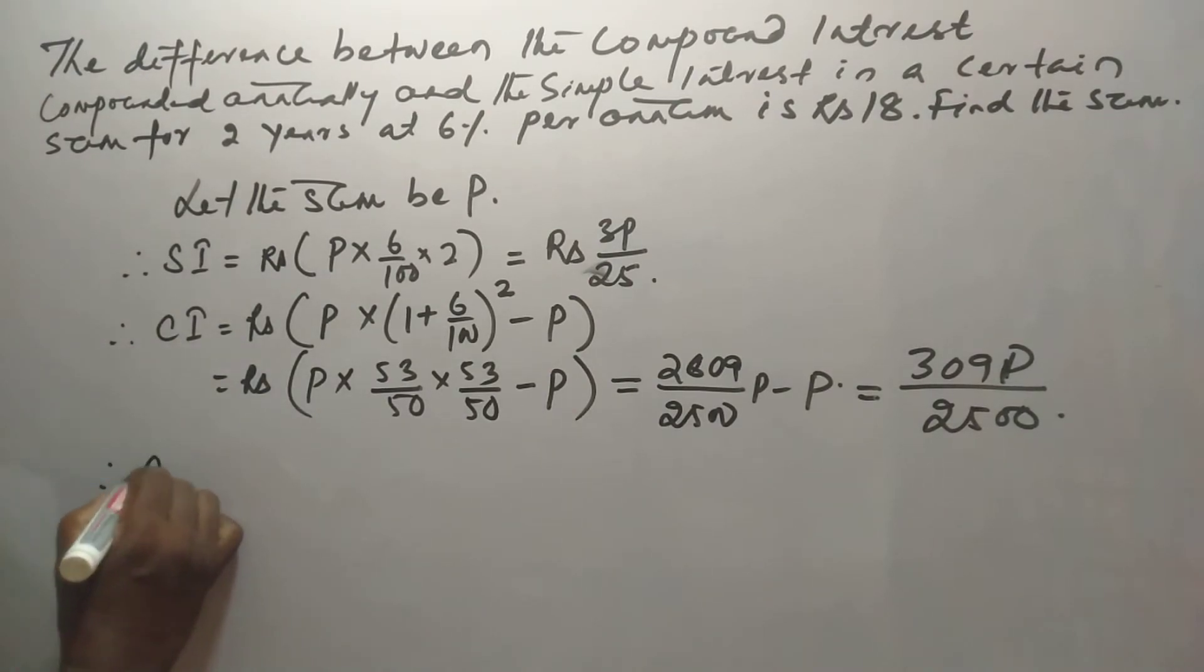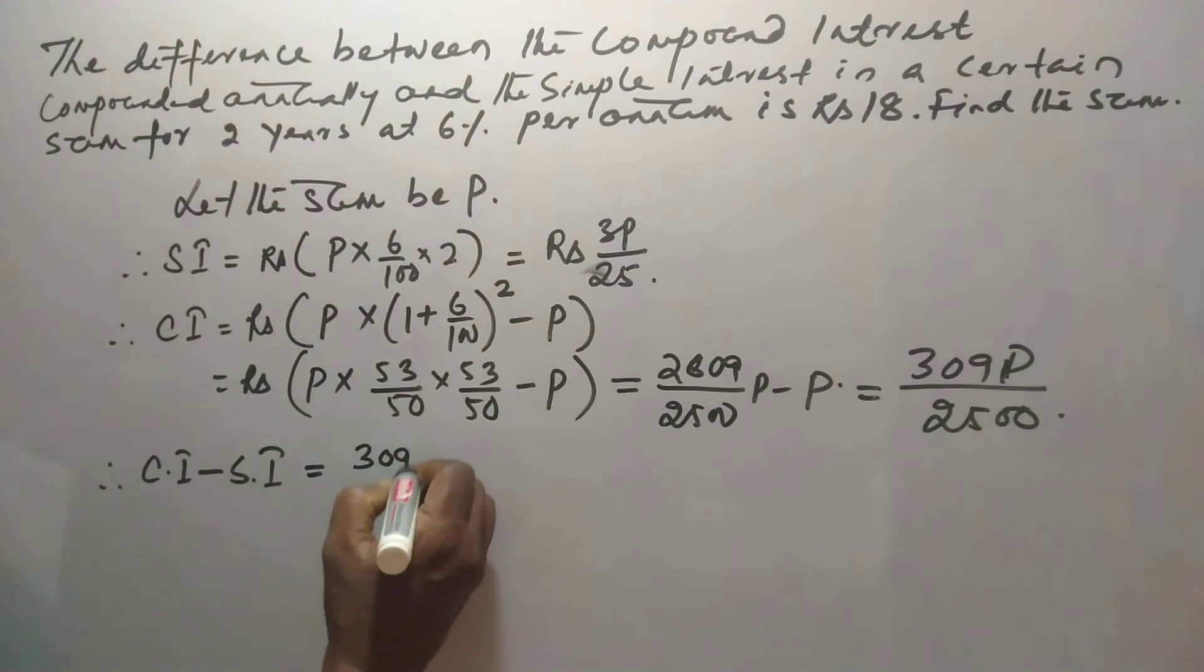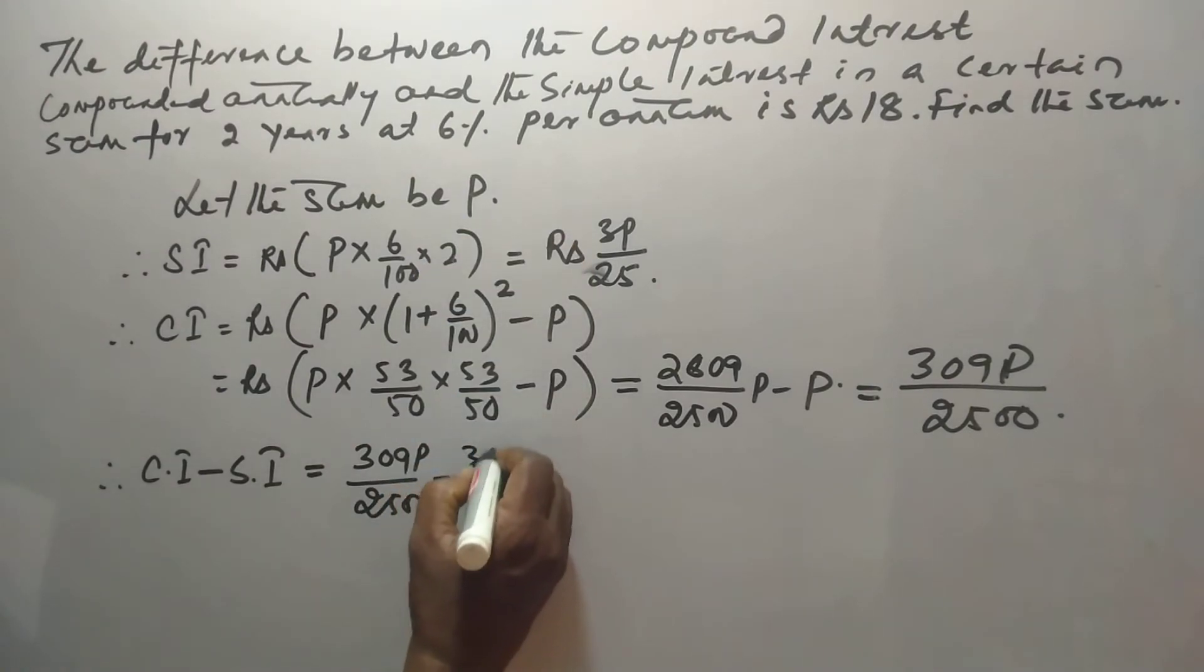Now, CI minus SI, compound interest minus simple interest, is 309P divided by 2500 minus SI, that is 3P divided by 25.